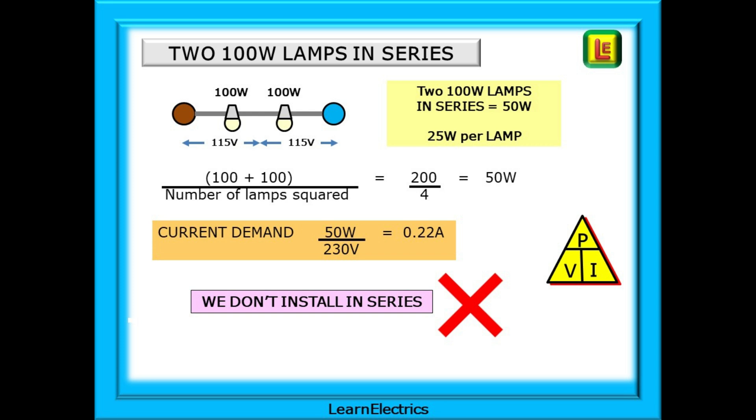A quick calculation shows that the current has dropped to 0.22 amps and it is for this reason that we don't usually install lamps in series. If we put more lamps in a room it's because we want more light, not less.